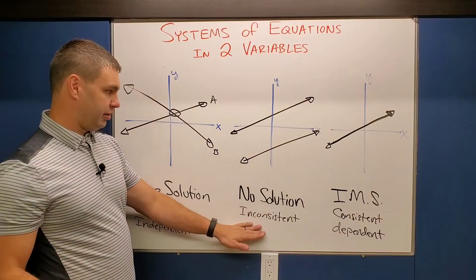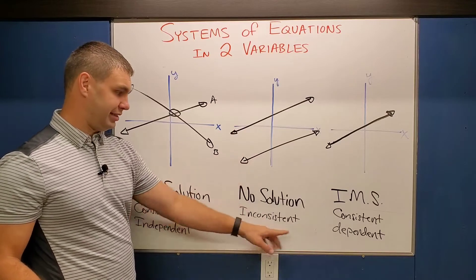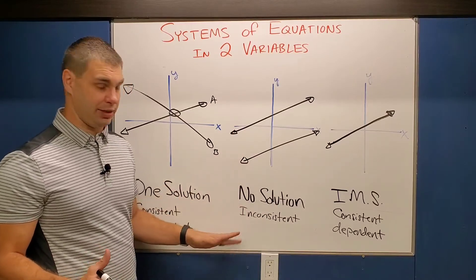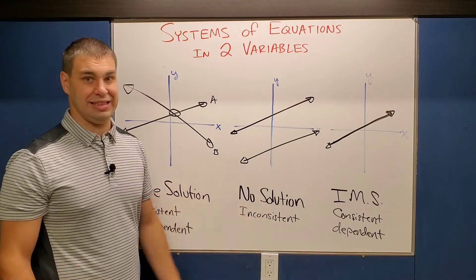And then the last thing is that the one with no solution doesn't have any dependency. We don't say it's independent or dependent. All it is is inconsistent.